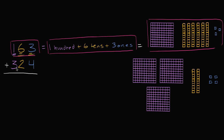Now I want to add the number 324 to 163. So 324 is, if we look at the hundreds place, it's three hundreds, plus two tens, and four ones. So plus four ones. And we see that right over here, drawn out — all the boxes. So 324 boxes, this is 324 boxes.